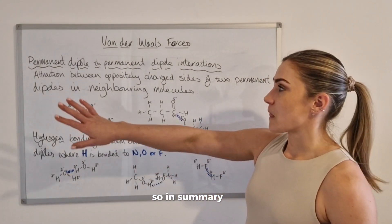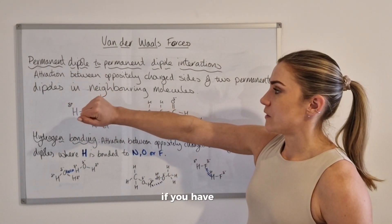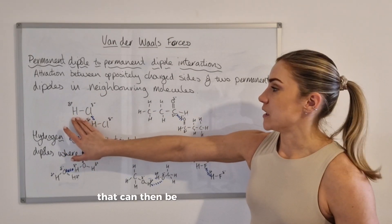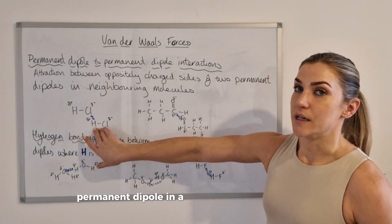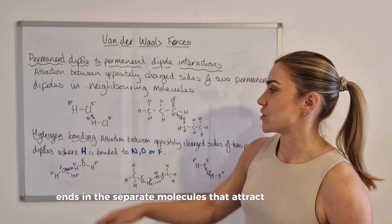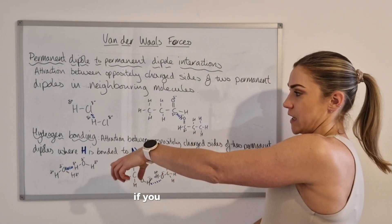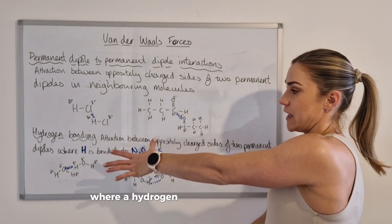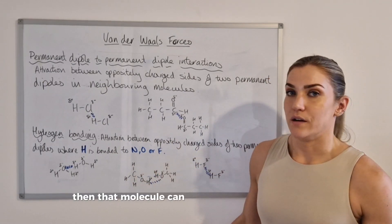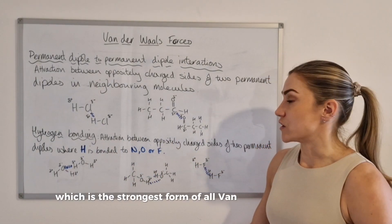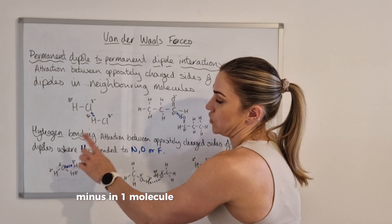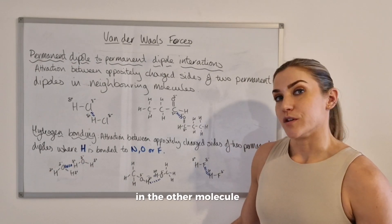In summary: if you have a permanent dipole in a molecule, it can be attracted to another permanent dipole in a neighbouring molecule, and it's the oppositely charged ends in the separate molecules that attract each other. If you have a molecule where hydrogen is bonded to nitrogen, oxygen, or fluorine, then that molecule can form hydrogen bonding, which is the strongest form of all van der Waals forces. Again, the delta minus in one molecule will attract the delta plus in the other molecule.